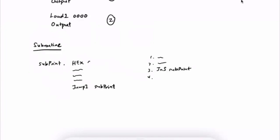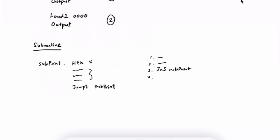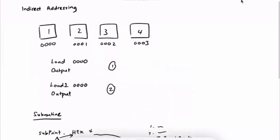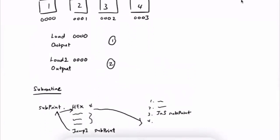The value of subprint becomes the address of the next instruction — which is 4. After you execute all the instructions in the subroutine, you will jumpI subprint, so it's jumping to subprint, looking at its value, and jumping to that address. Then it will execute the instructions at that return address. After this visual illustration, we will go directly to the code and do two practices.